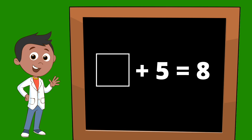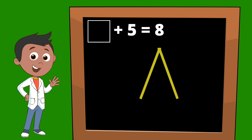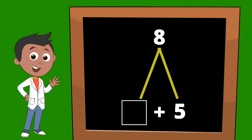Let's do another equation. This is a new equation and it's missing its first addend. We're going to start with a Math Mountain and on the left side of our mountain we're going to put a square for our mystery number, then our plus sign, and then the number five. Mystery number plus five, and our equation told us that the total is eight, so our eight goes at the top of our Math Mountain.